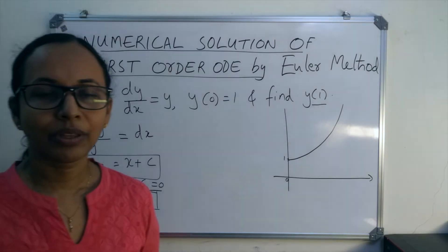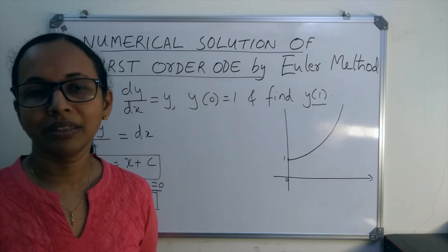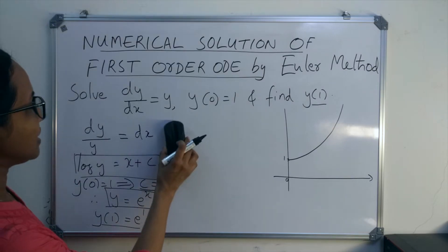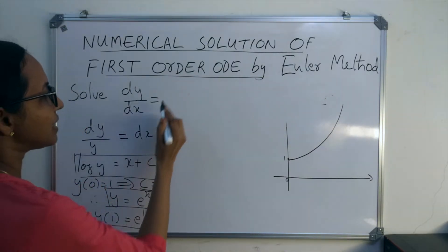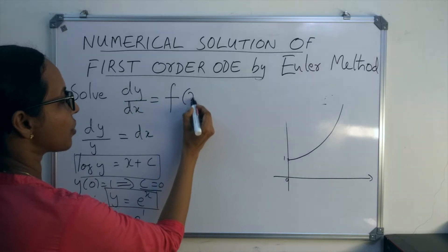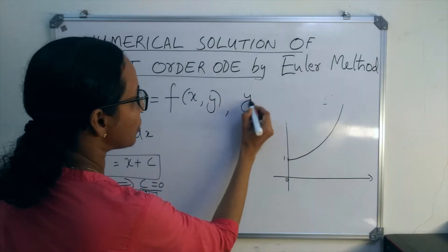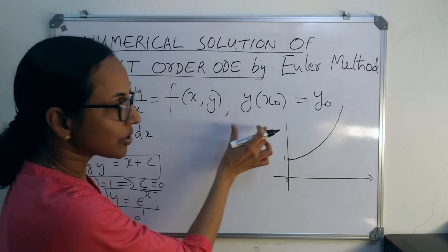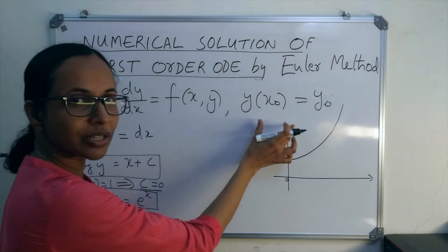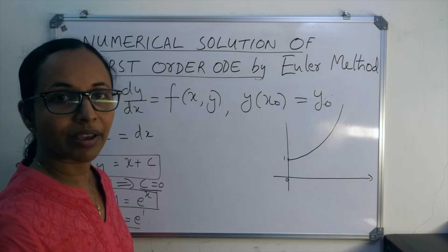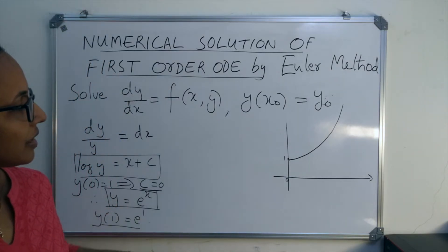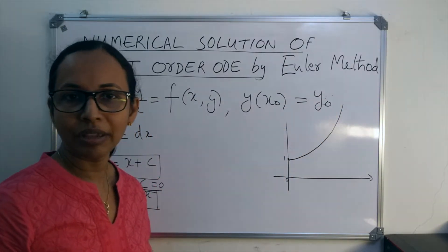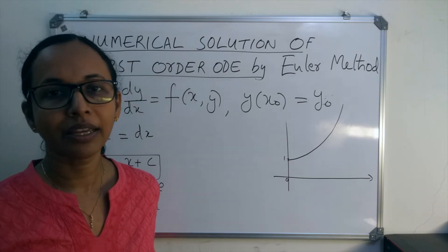In this module, you have to learn three different methods for finding solutions of first-order initial value problems — that is, problems of the form dy/dx = f(x, y) given that y(x₀) = y₀. This is the initial condition, so it is a differential equation problem with an initial condition. Such problems are known as initial value problems. The three methods are: Euler method, improved Euler method, and Runge-Kutta method.